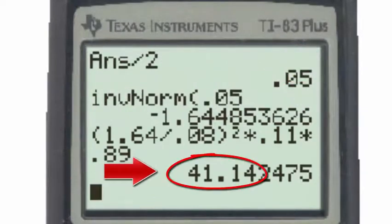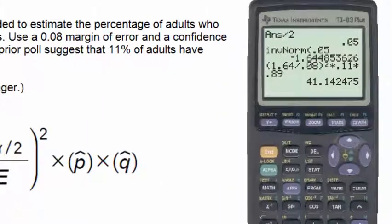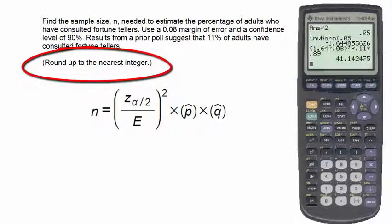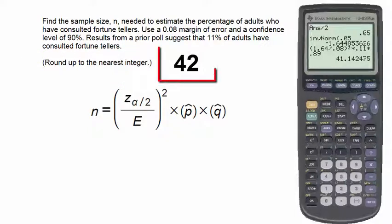We see that the number we get is 41.14. Our directions in the problem tell us not to round off, but instead to round up, so the answer will be the number 42. That is the sample size necessary to estimate the percentage of adults who have consulted fortune tellers.